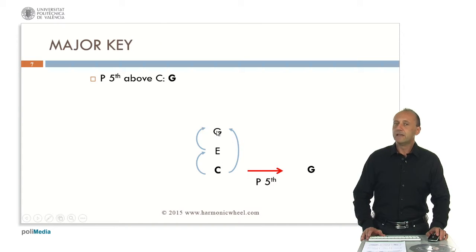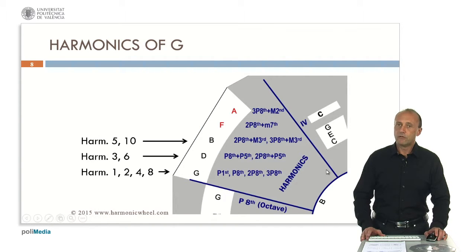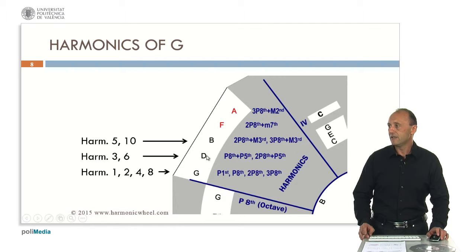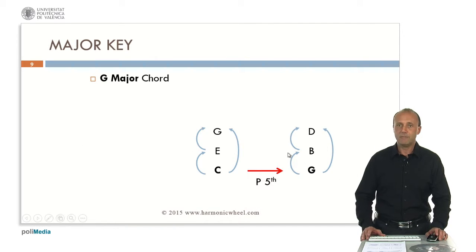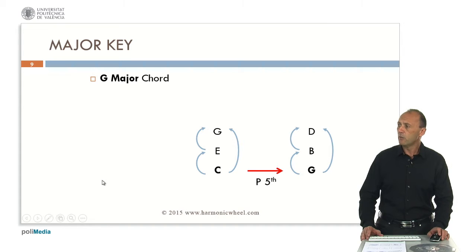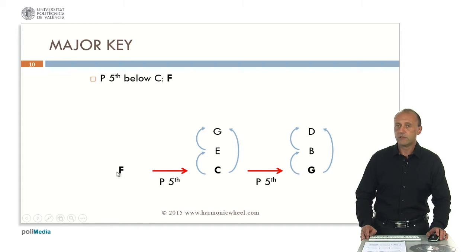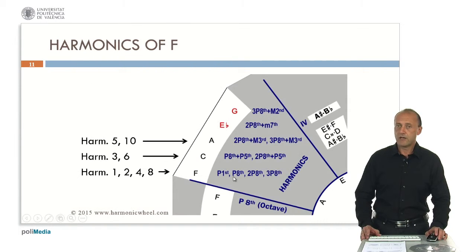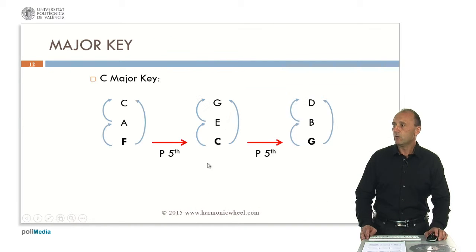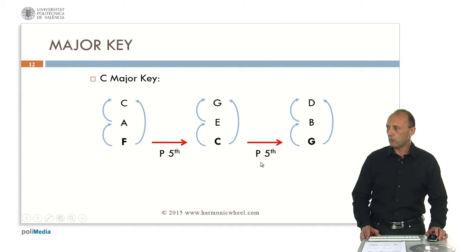If we now take the most important note from C, which is G, its third harmonic, and we look for harmonics of G — these are notes G, D and B — we form the G major chord. Now we can choose a note below C such that its third harmonic is C; this note is F. If we look for the first harmonics of F, that is notes F, C and A, we form the F major chord.